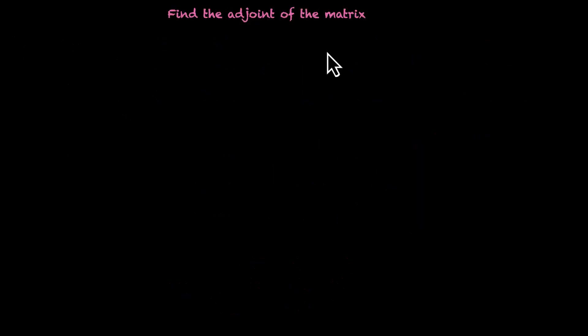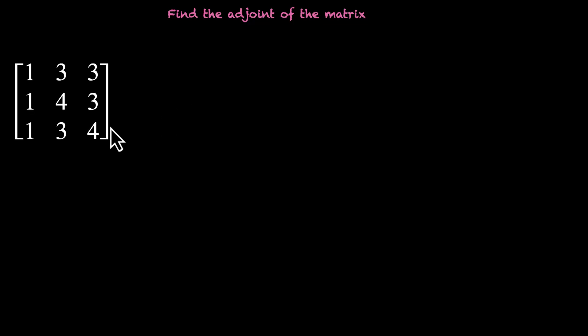Let's practice. Find the adjoint of this matrix: 1, 3, 3, 1, 4, 3, 1, 3, 4. Pause the video and try this yourself.